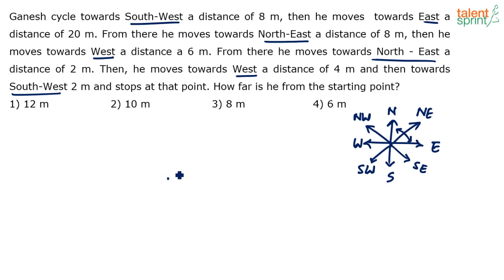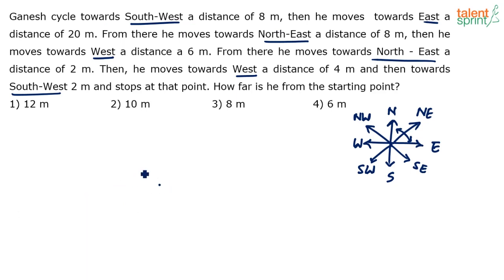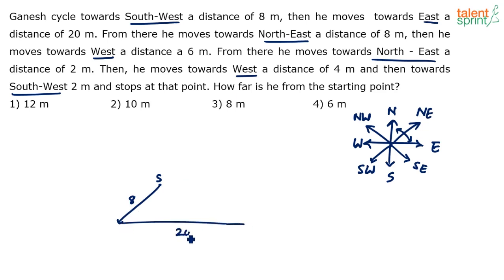Let's trace the path. Assume this is the starting point. Ganesh cycles towards southwest a distance of eight meters — he has traveled eight meters in the southwest direction. Then he moves towards east a distance of 20 meters. East is always towards the right side, so he moves 20 meters and stops here. From there he moves towards northeast a distance of eight meters — northeast is always in this direction.